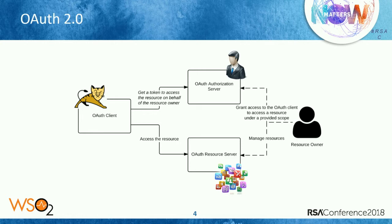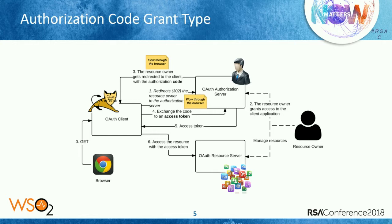There are multiple ways to implement the first two phases — how you get an authorization grant and how you exchange it for an access token. These are called grant types. OAuth 2.0 core specification defines four grant types. The most common is the authorization code grant type. If you use Facebook login to log into any web application, most of the time you are using OAuth 2.0 authorization code grant type — more than 80% of OAuth implementations on the internet use this grant type.